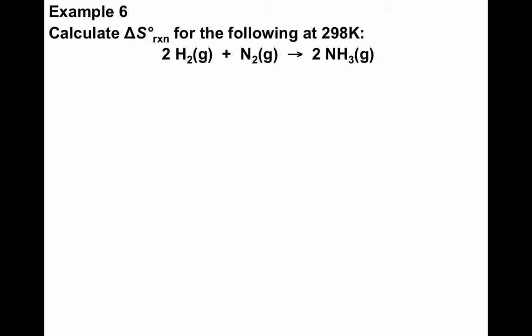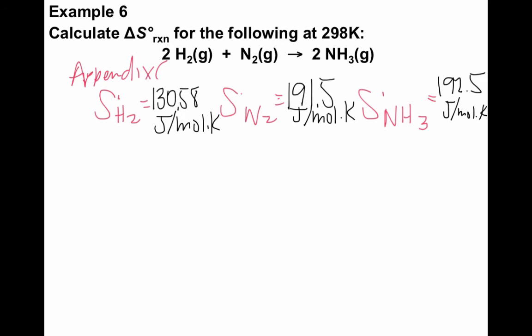So the first thing that you want to do is look up in appendix C the standard molar enthalpies for each of our products and reactants. So we're going to find S naught for H2. We're going to find S naught for N2. We're going to find S naught for NH3. So after you look up the standard molar entropies, which I found each of those in appendix C and put them on here,